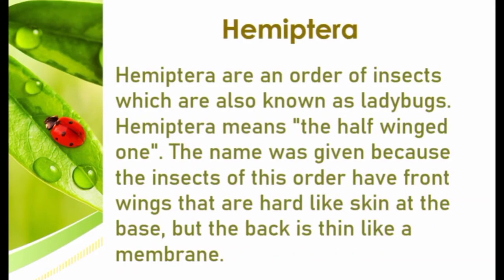Hemiptera is an order of insects also known as true bugs. The name was given because the insects of this order have front wings that are hard like skin at the base but thin like a membrane at the back. Hemiptera is an omnivorous insect that consumes almost all types of food, from liquid, plants, seeds, other insects, to small animals such as fish.